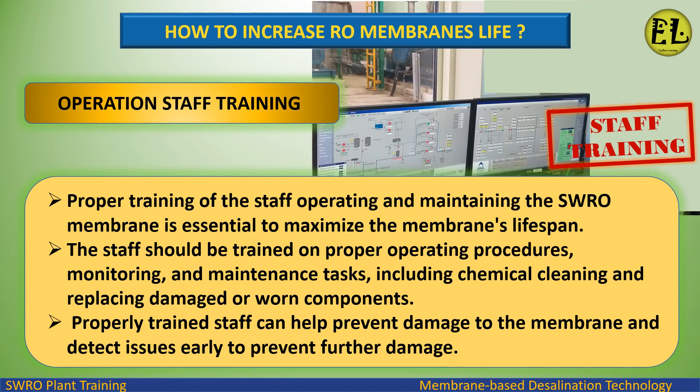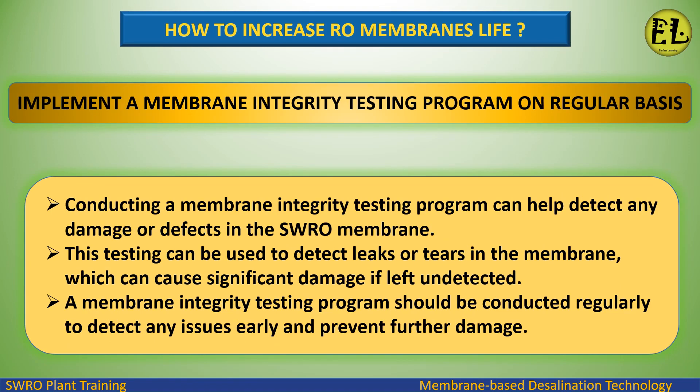Proper training of the staff operating and maintaining the SWRO membrane is essential to maximize the membrane's lifespan. Staff should be trained on proper operating procedures, monitoring, and maintenance tasks, including chemical cleaning and replacing damaged or worn components. Properly trained staff can help prevent damage to the membrane and detect issues early to prevent further damage.